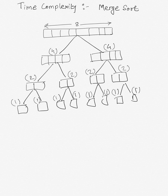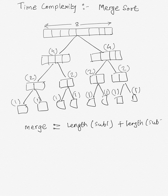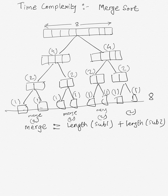Now we cannot divide arrays of length 1 any further, so the merge operation begins. As I said, the number of operations the merge operation takes is equal to length of sub-array 1 plus length of sub-array 2. In this case, the merge operation will take 2 operations in the worst case at each pair, so summing them up gives 8 operations at this level.